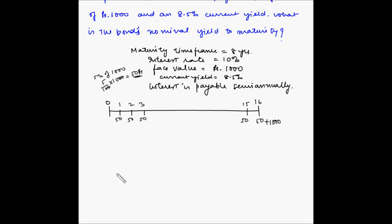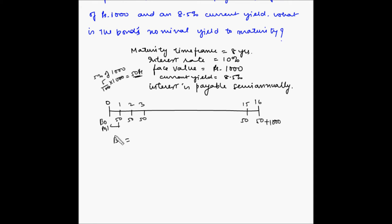We know that in order to find yield to maturity, we have to find the rate of return at which the present value of the bond is equal to the sum of the present values of the cash flows. So B0 is equal to the sum of the present values PV1, PV2, and so on.